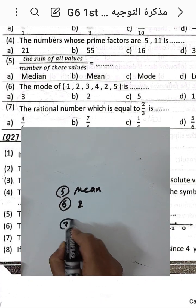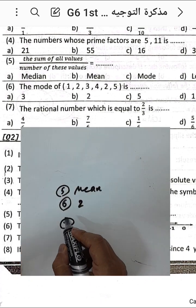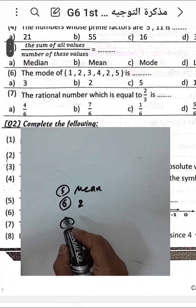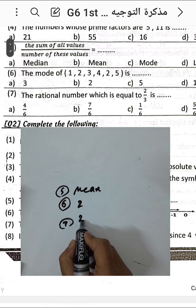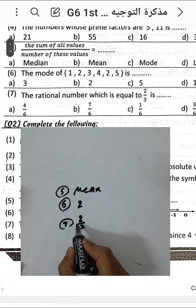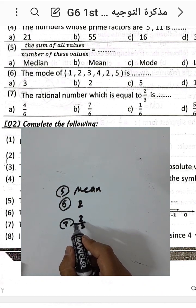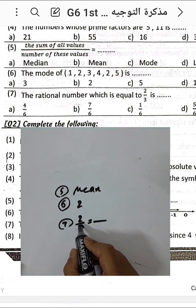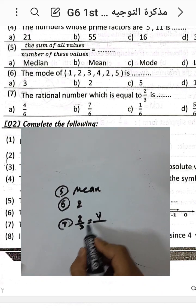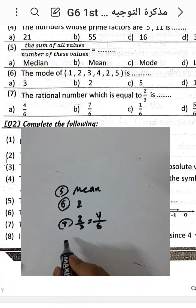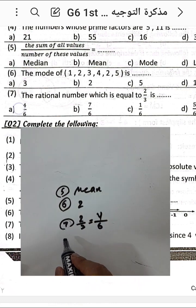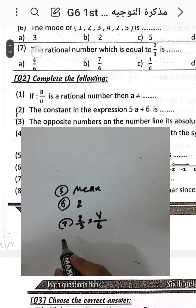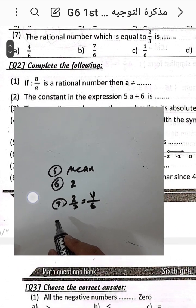Question number seven: the rational number equal to one over three — we multiply both numerator and denominator by two. Two times one equals two and two times three equals six, giving us 2 over 6. Choose letter e.